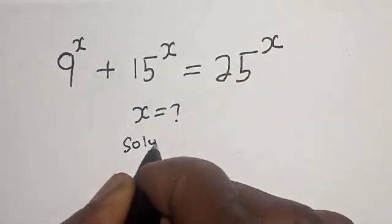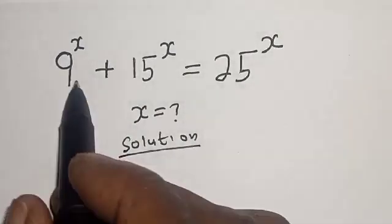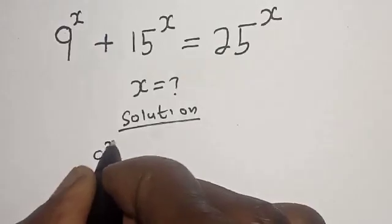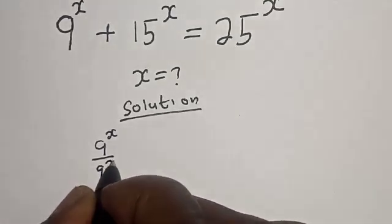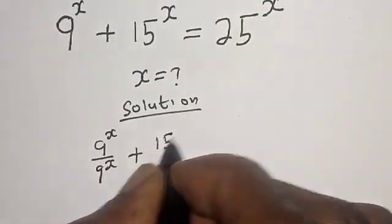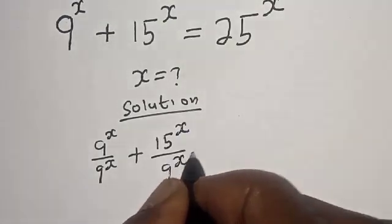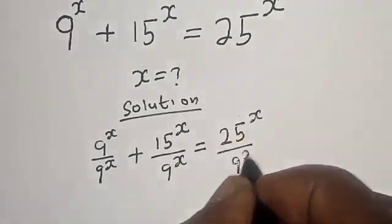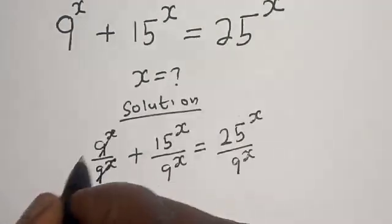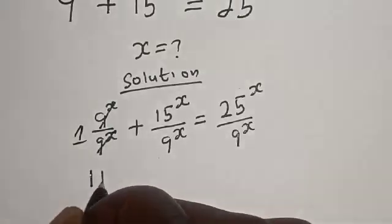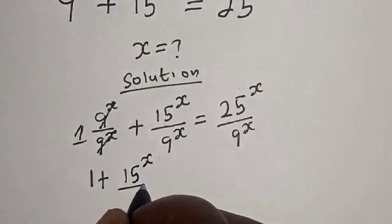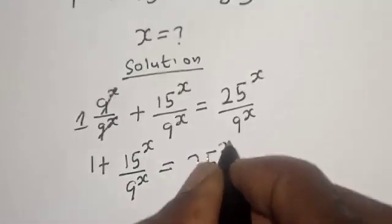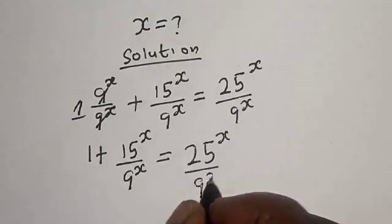Solution. We have this given equation. Let's divide both sides by 9 to the power of s. That is, 9^s divided by 9^s, plus 15^s divided by 9^s, is equal to 25^s divided by 9^s. The first term cancels to 1, giving us: 1 plus 15^s divided by 9^s is equal to 25^s divided by 9^s.